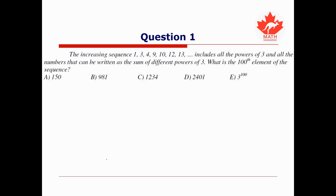In this first question, we're told that the increasing sequence 1, 3, 4, 9, and so on, includes all powers of 3 and all numbers that can be written as the sum of different powers of 3. The question asks: what is the hundredth element of the sequence? The terms look like a sum 3^(k_n) + 3^(k_{n-1}) + ... + 3^(k_1), where all the k's are distinct.